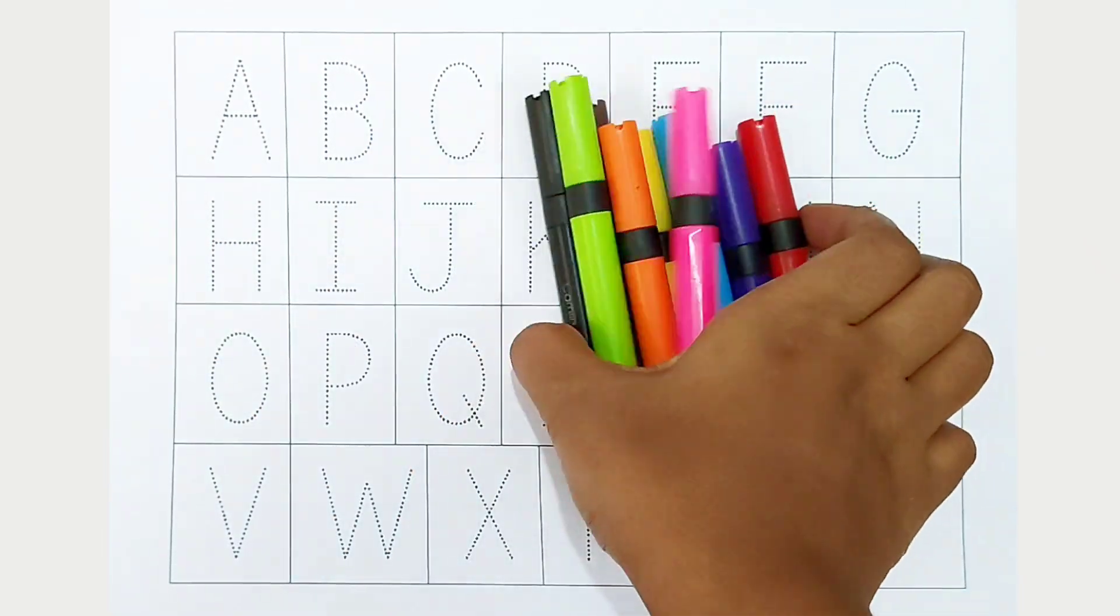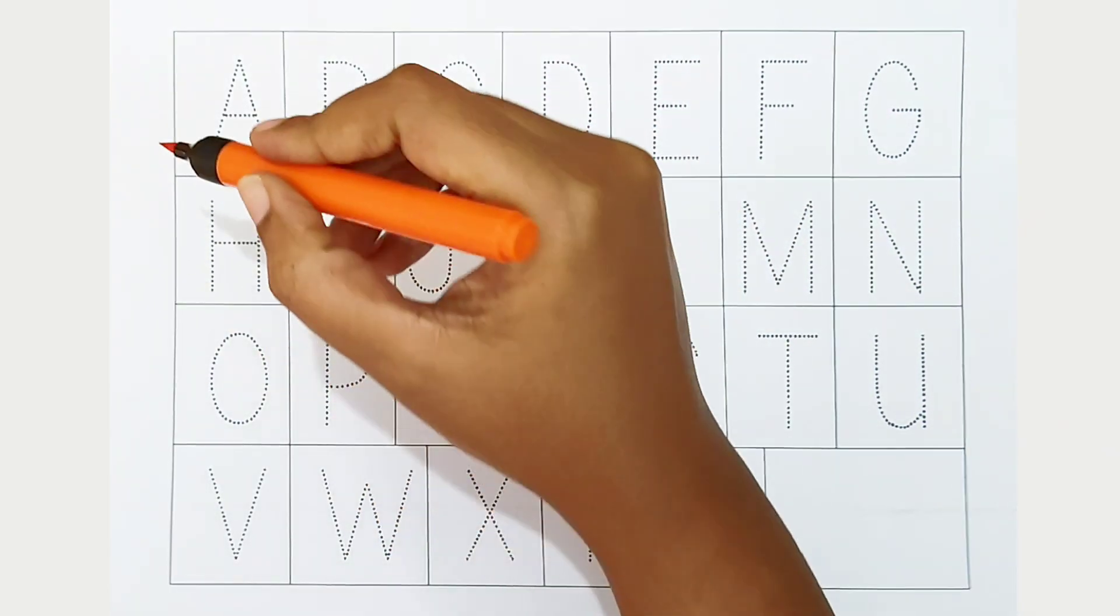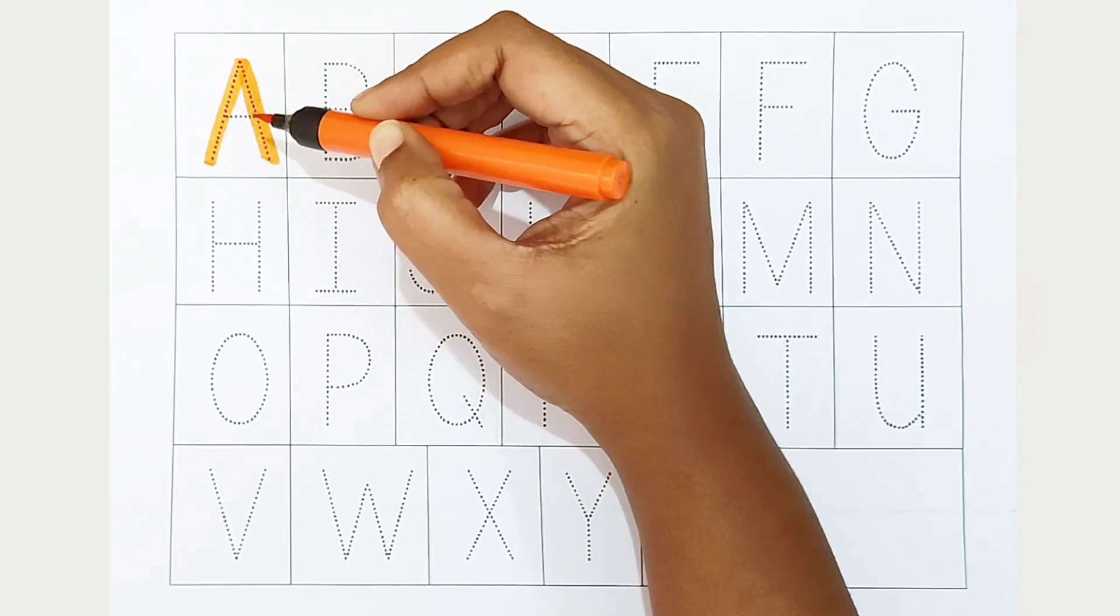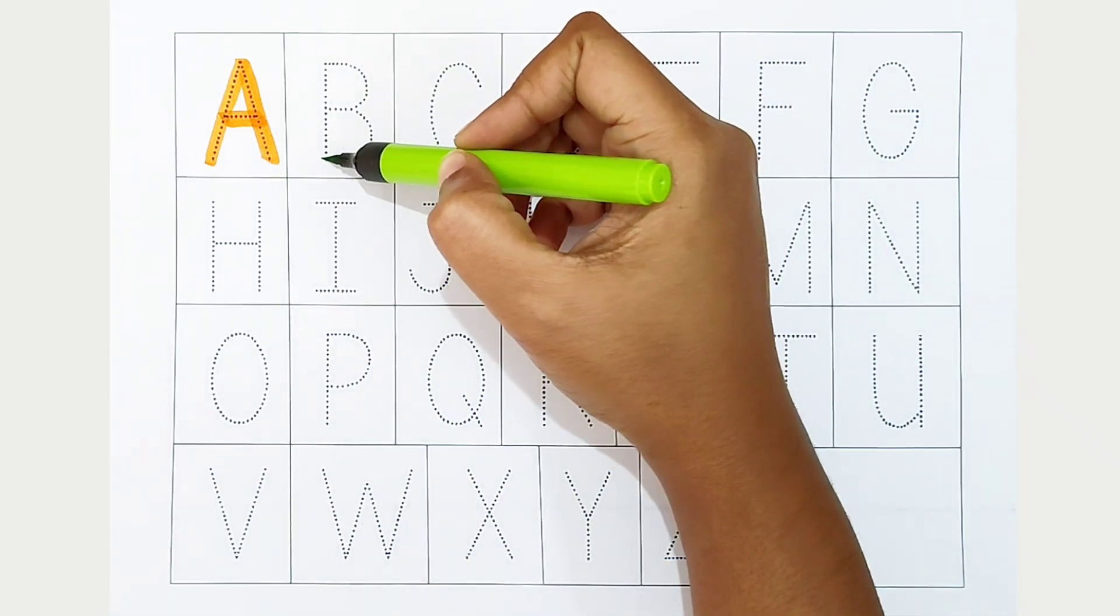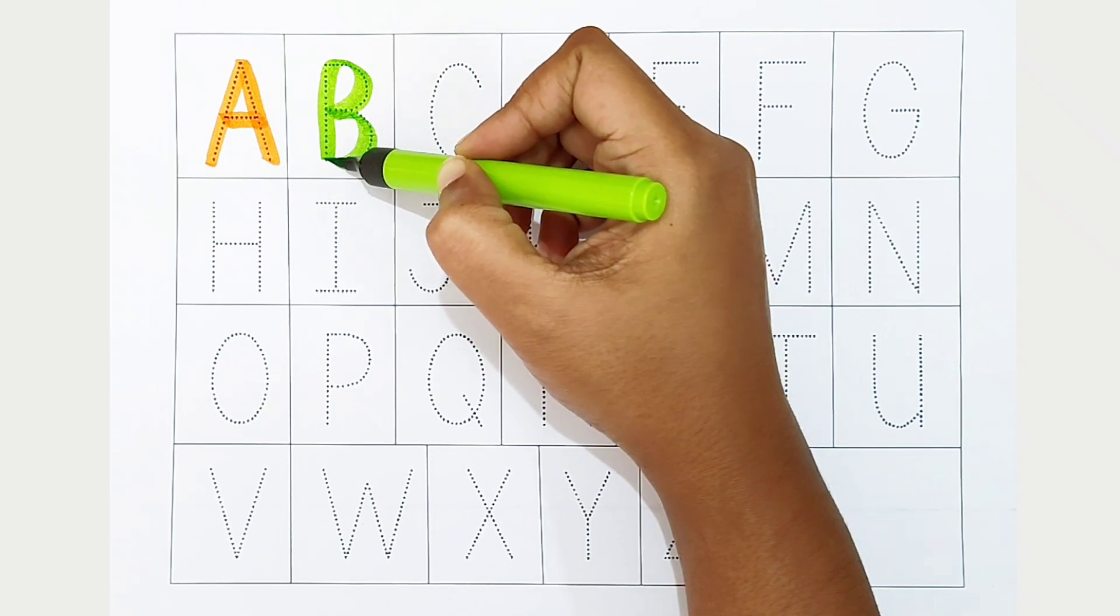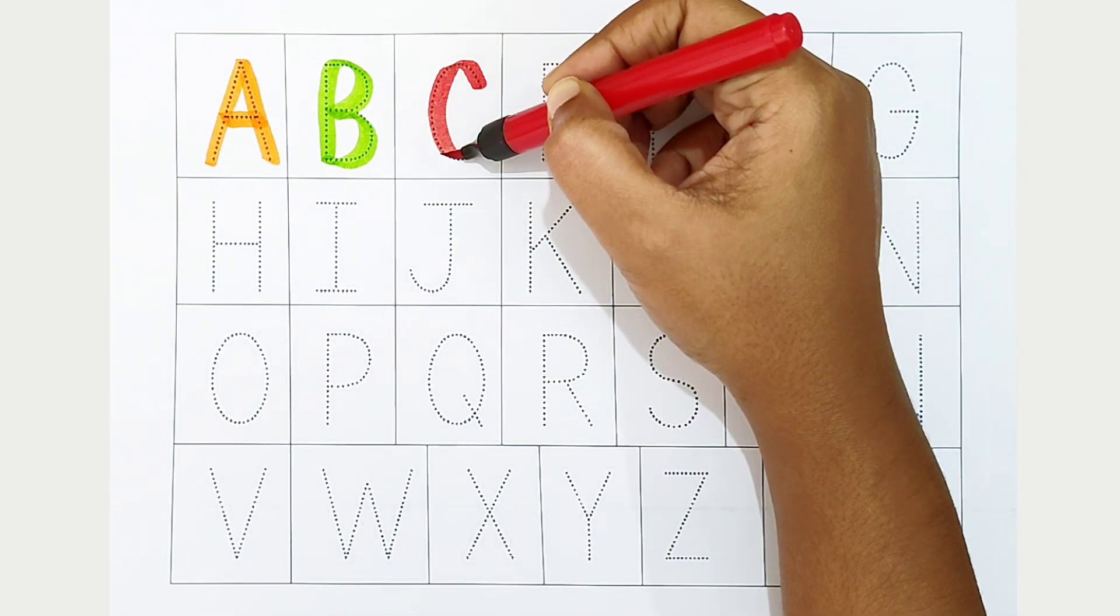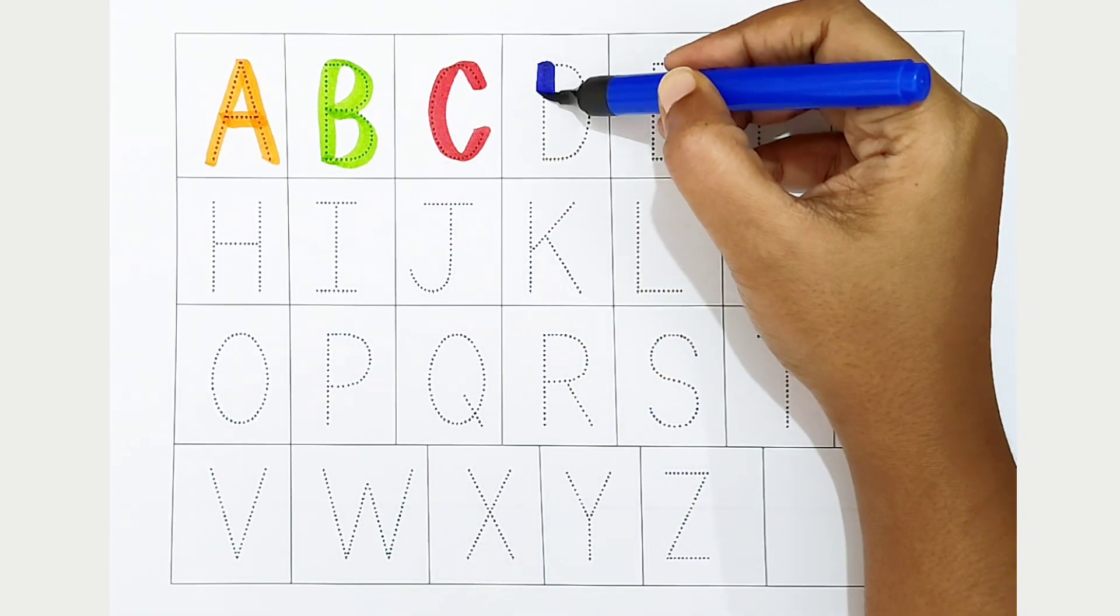Hi kids! Today we can learn the alphabets from A to Z. Let's begin. A, orange color, A is for aeroplane. B, light green color, B is for bat. C, red color, C is for caterpillar. D, dark blue color...